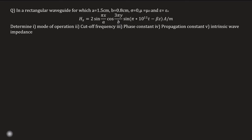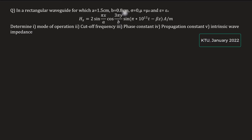Hello friends. In electromagnetics, today I will talk about solutions to the previous question. In a rectangular waveguide for which a is equal to 1.5 centimeter and b is equal to 0.8 centimeter, sigma is equal to 0, mu is equal to mu0, and epsilon is equal to epsilon0.